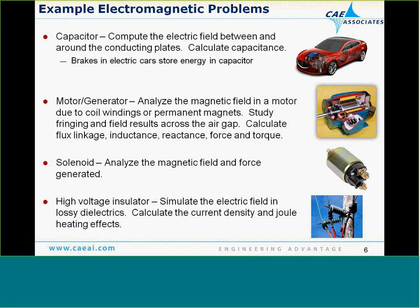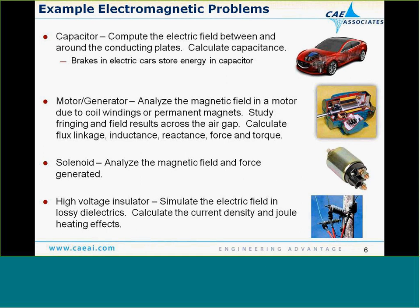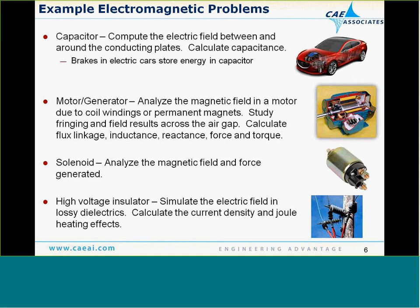Things we can solve in an electromagnetic analysis include a capacitor — computing the electric field between conducting plates and calculating the capacitance, such as energy storage in an electric car's braking system. We can analyze motors and generators, looking at magnetic fields due to coil windings or permanent magnets, fringing effects, flux linkage, inductance, reactance, force, and torque. We can also analyze a solenoid, calculating the forces and torque generated.